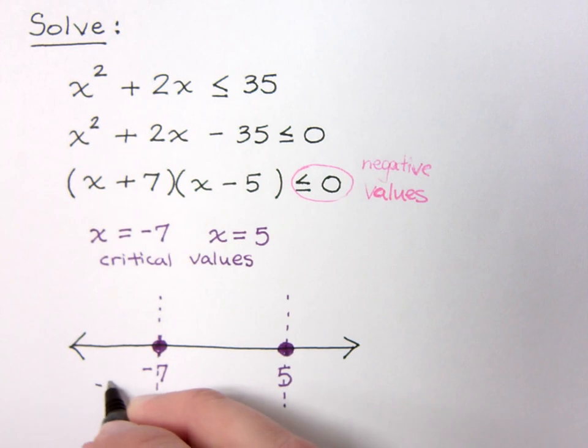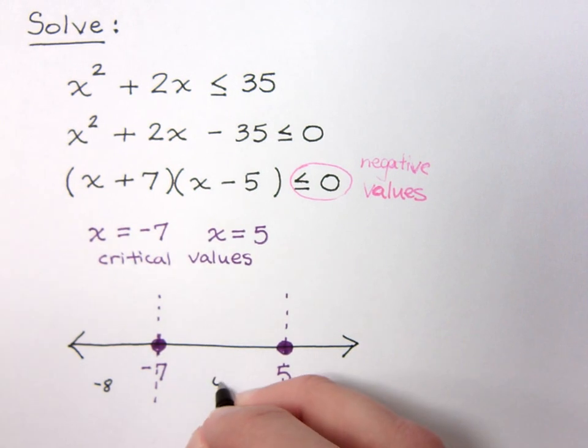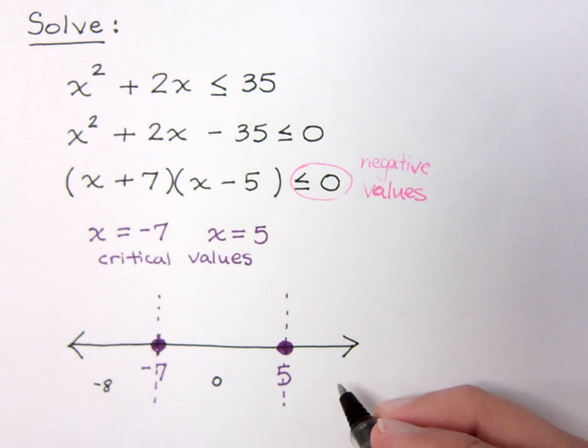So if I pick something like, let's suppose I pick negative 8 here, no need to get really large. Between negative 7 and 5, if you can, I pick 0. 0 is the easiest number to plug into anything. And then pick something that's larger than 5, let's just say 6.